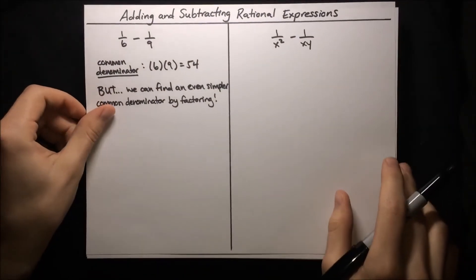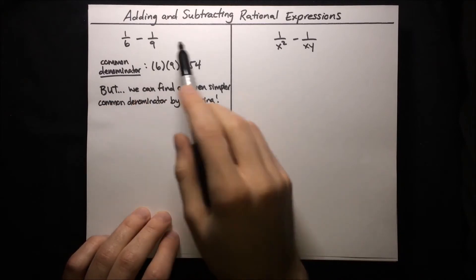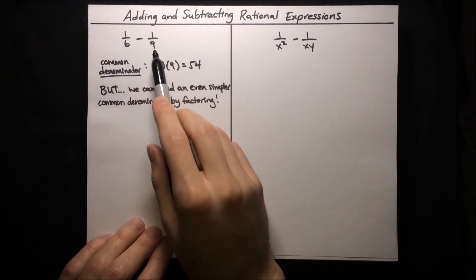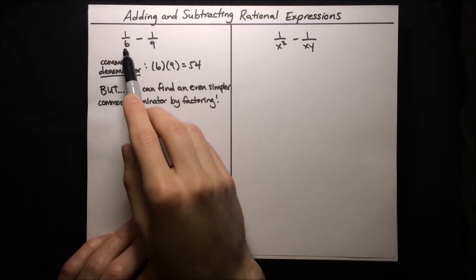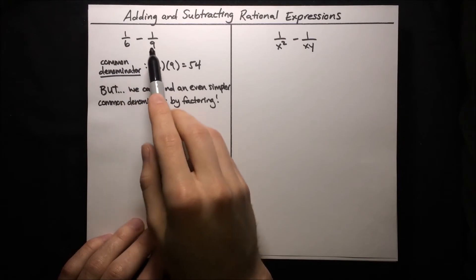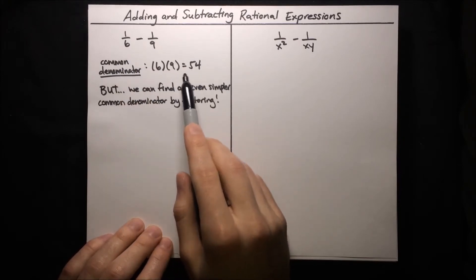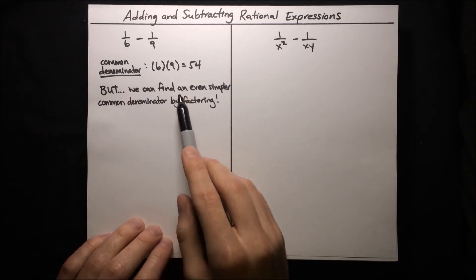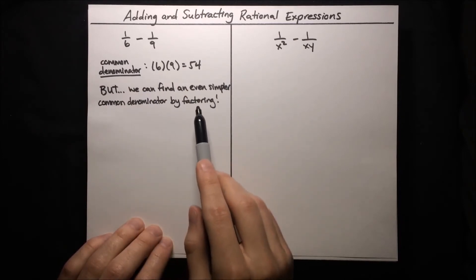Here's a similar set of examples, except this time we've got subtraction rather than addition, and the denominators are composite rather than prime. We could proceed in the same way and find a common denominator by just multiplying the two denominators — 6 times 9 makes 54 — but because these denominators are composite, we can find an even simpler common denominator by factoring them.